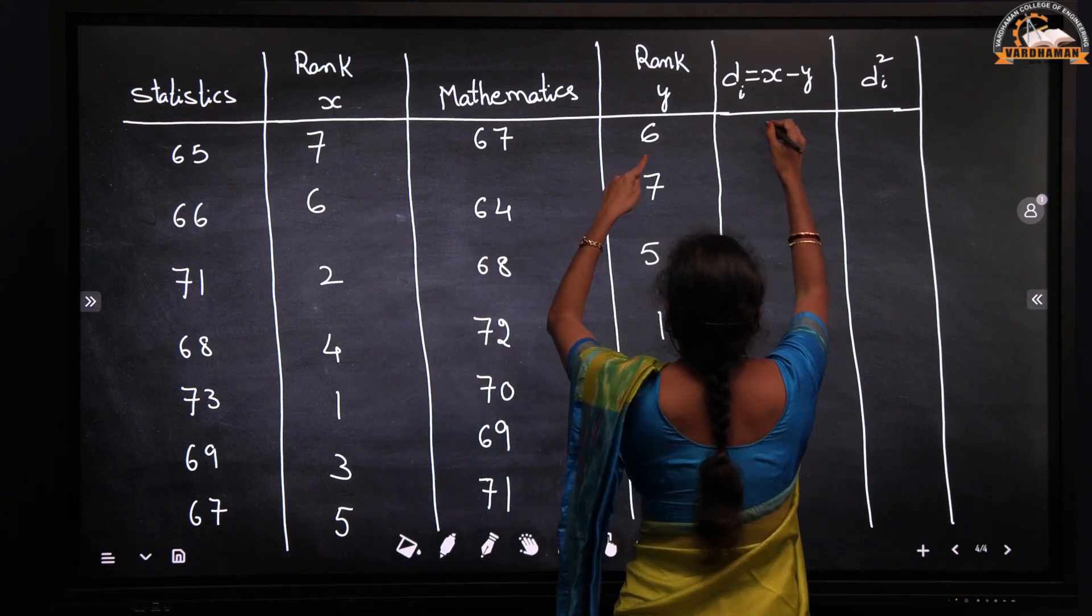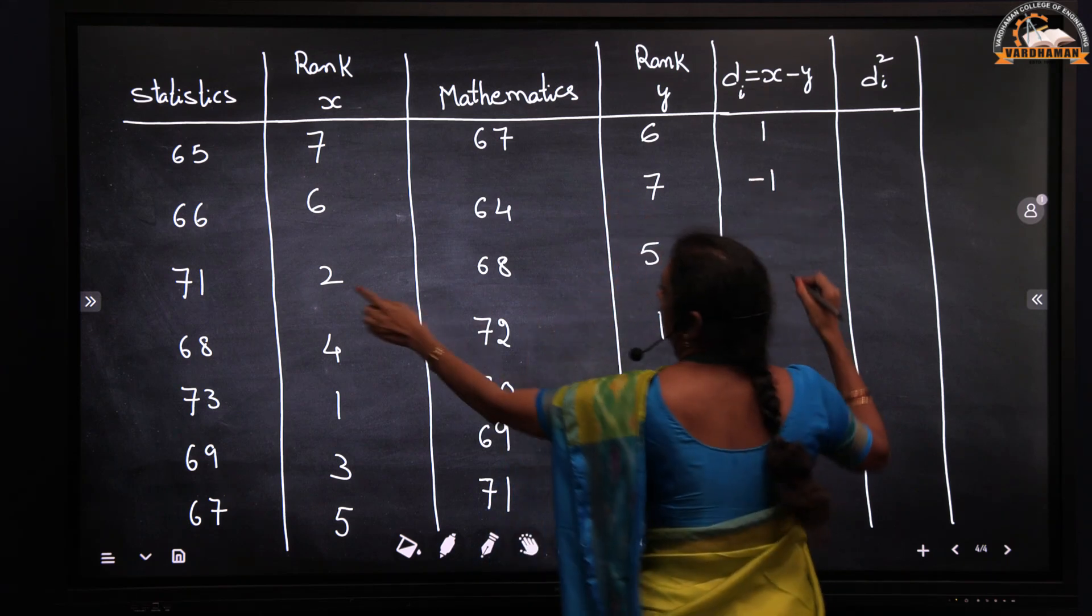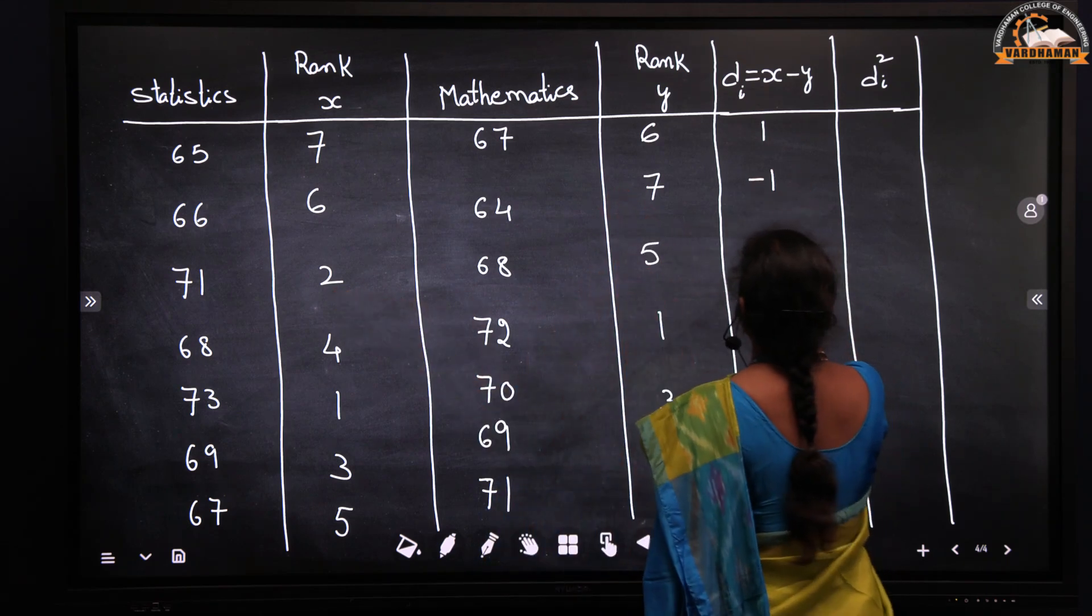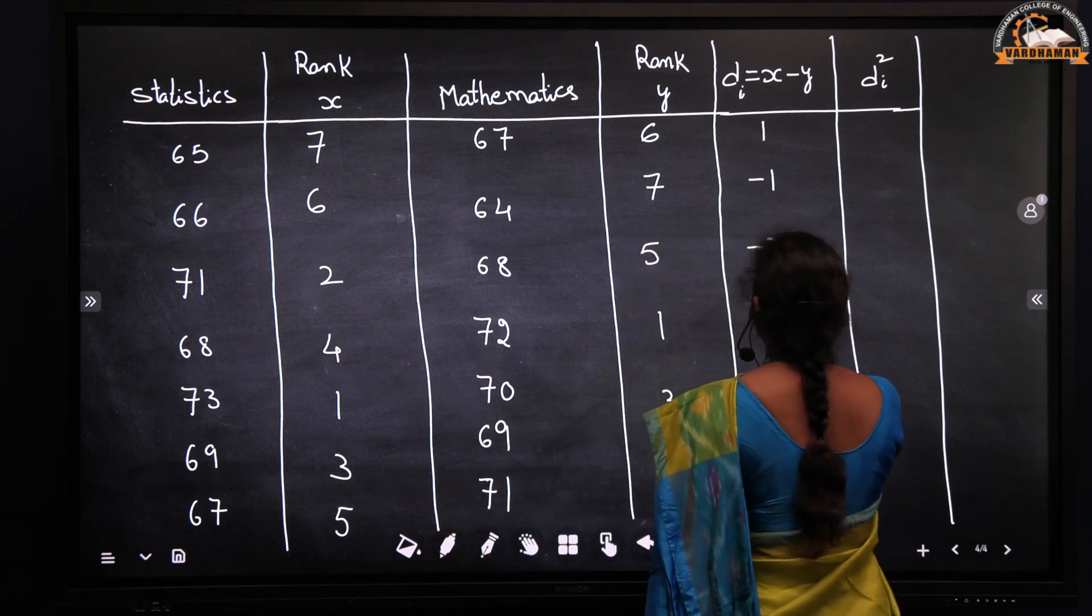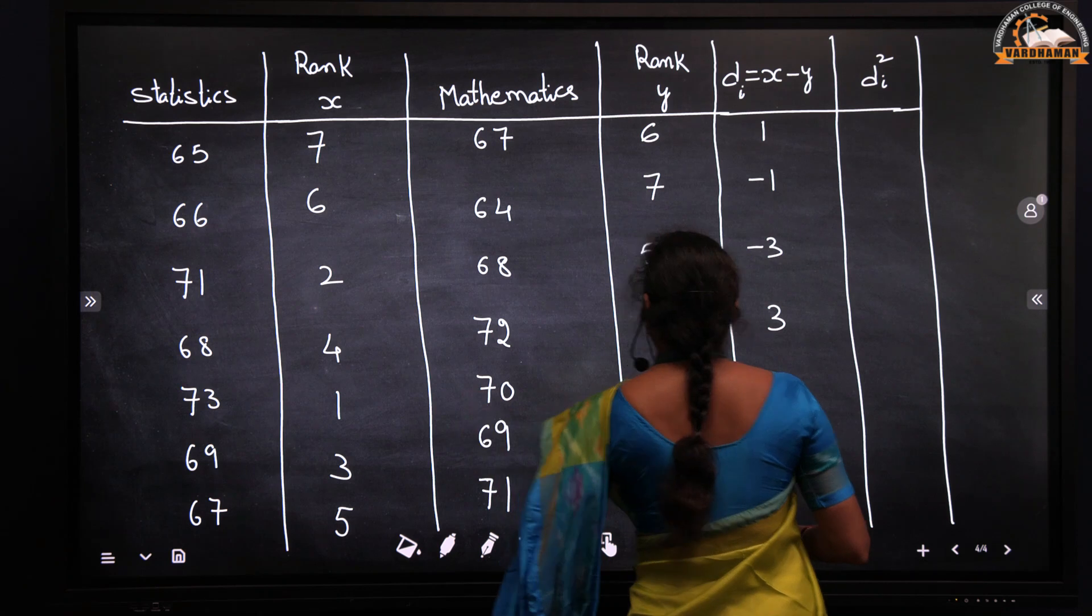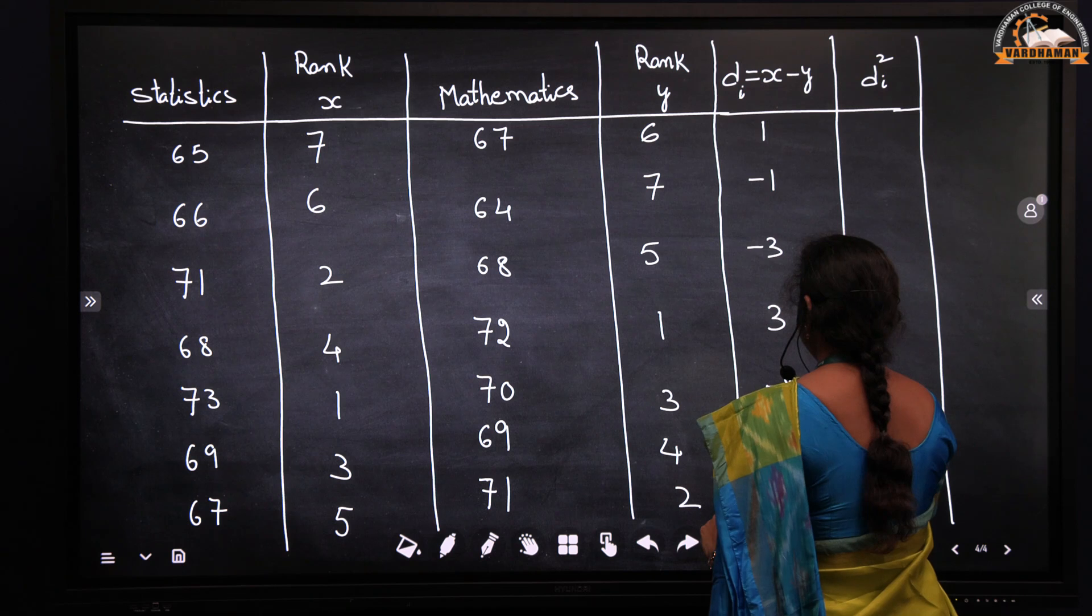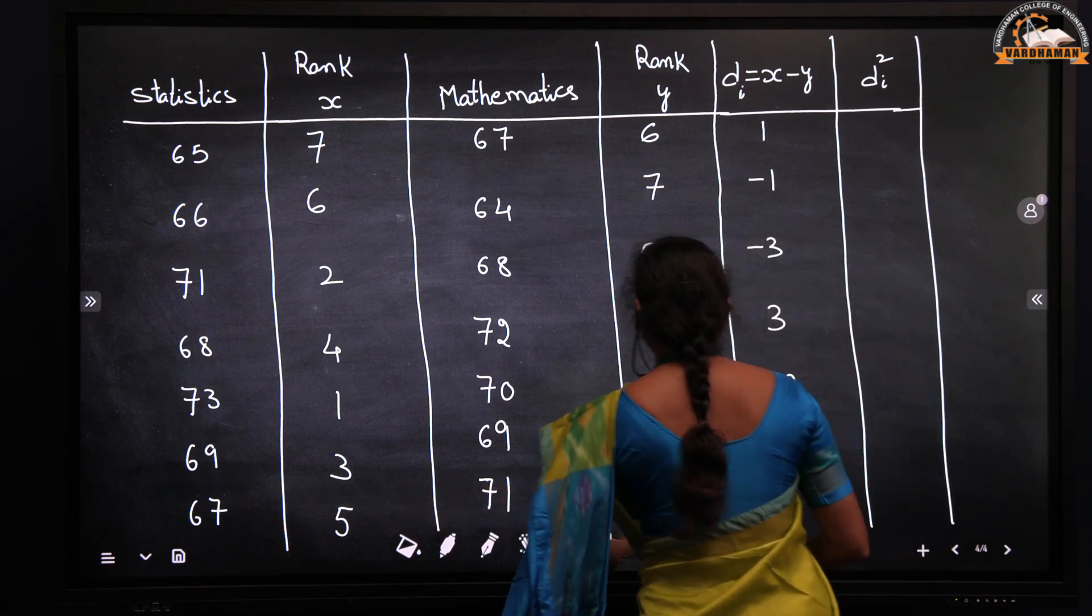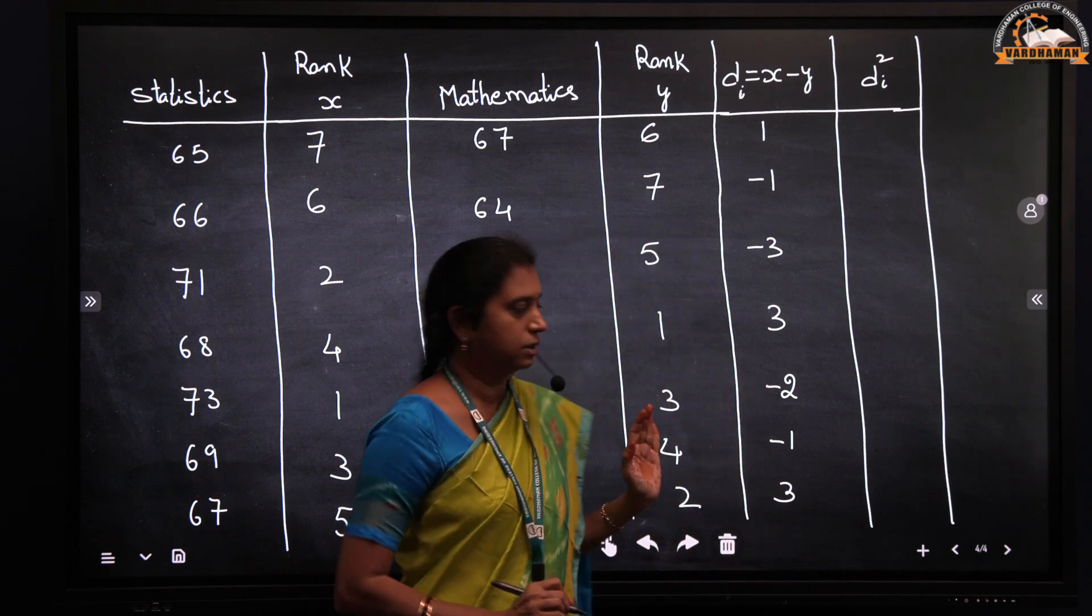So first, 7 minus 6 is 1, then 6 minus 7 is minus 1, 2 minus 5 is minus 3, 4 minus 1 is 3, 1 minus 3 is minus 2, 3 minus 4 is minus 1, and 5 minus 2 is 3. After finding the differences for the ranks we will find out di square.